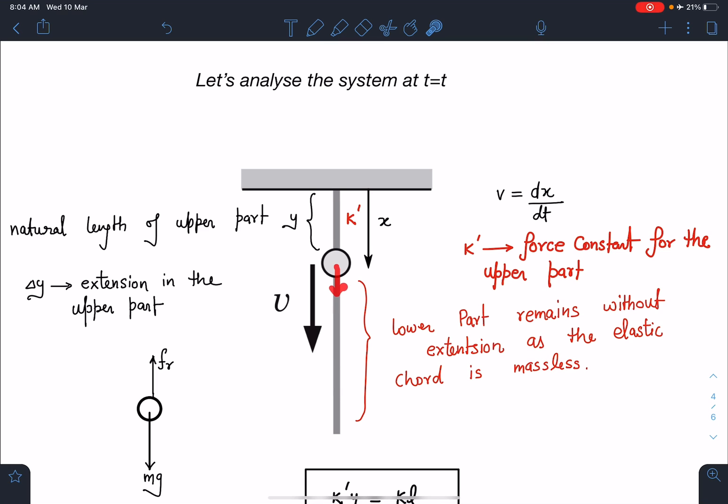Because it is massless, the force must be balanced in the upper part and this part will not be feeling anything, or you can say it remains in its natural length without any extension. So the natural length of the upper part is y and the extension here is delta y, so x is nothing but y plus delta y. Extension is coming only in upper part.